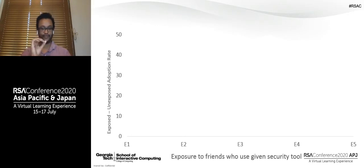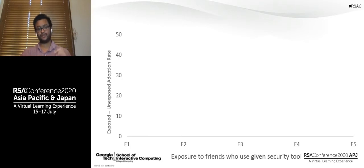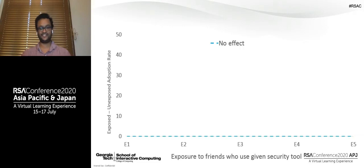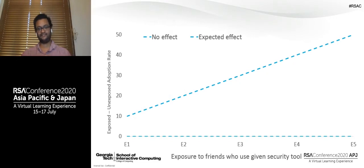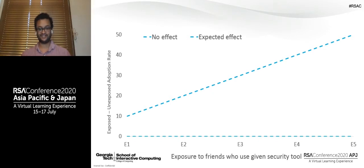The difference in adoption rate between the exposed versus unexposed group is our proxy effect for social influence. If social influence had absolutely no effect, you'd see a flat line at zero. More likely, you'd see a line going up and to the right — the expected effect — because social psychology literature suggests the more of your friends who do something, the more likely you are to do that same thing. Plotting results for trusted contacts, we see something that looks a lot like the expected effect: social influence has a positive effect even at low levels of exposure, and that effect becomes increasingly positive as you're exposed to more friends who use trusted contacts.